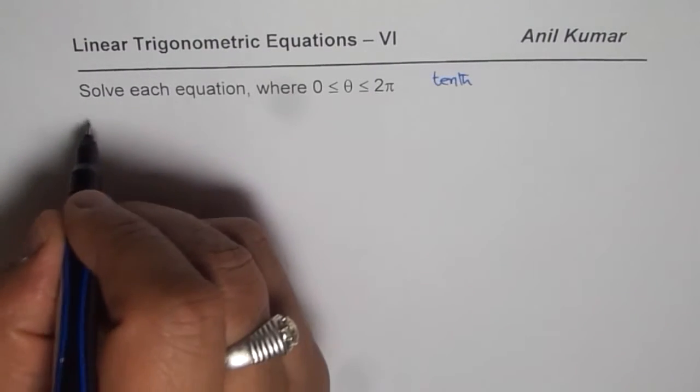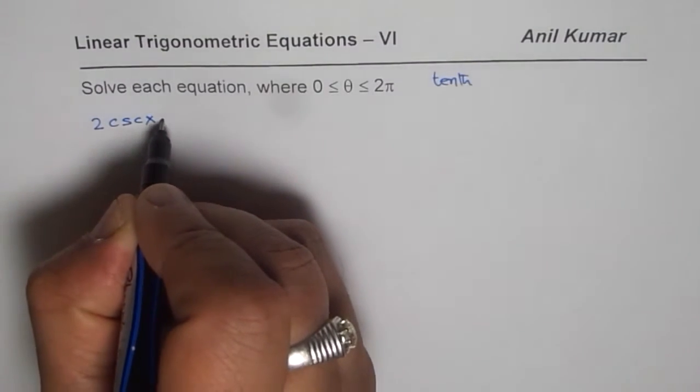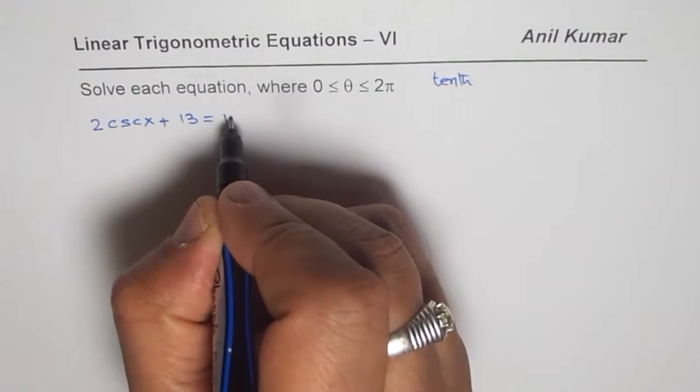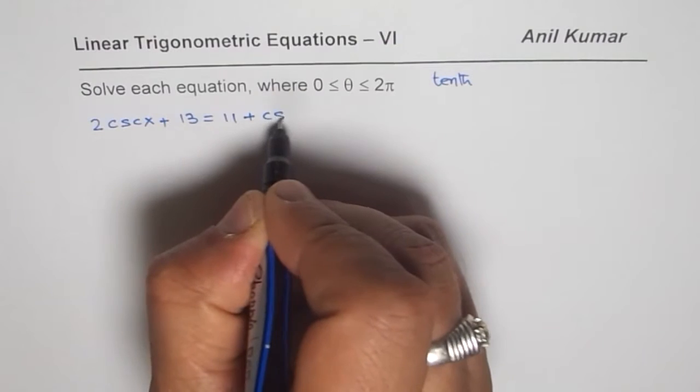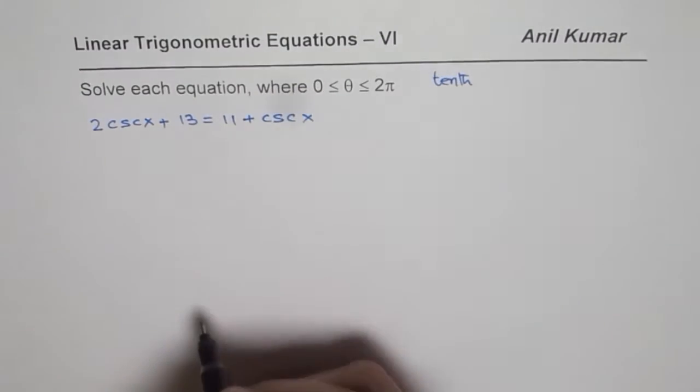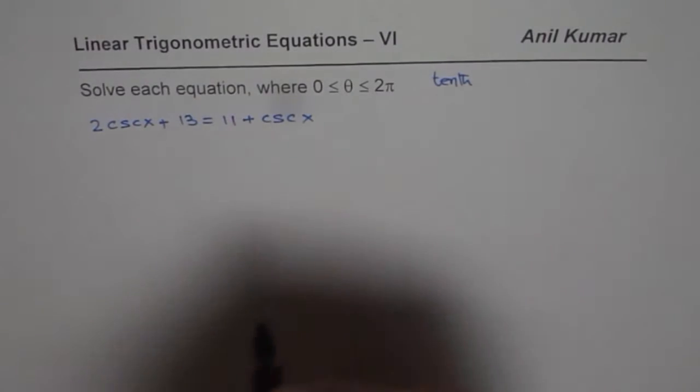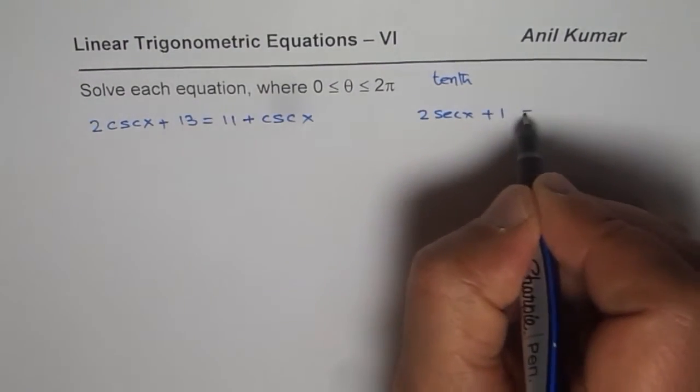Let us take the equation 2csc(x) + 13 = 11 + csc(x) for example. Let this be one of the equations and let me take another equation as 2sec(x) + 1 = 6.